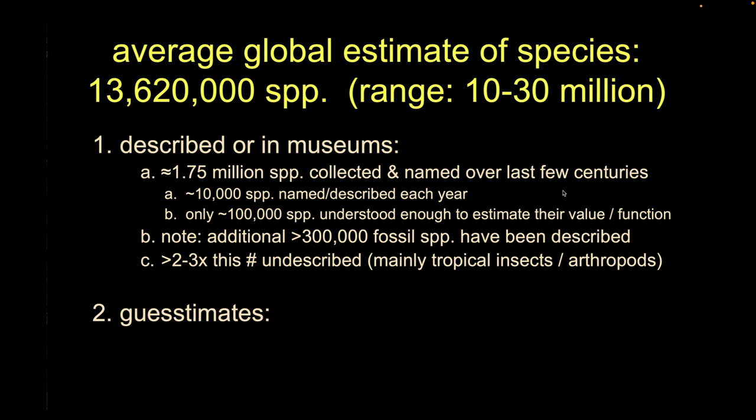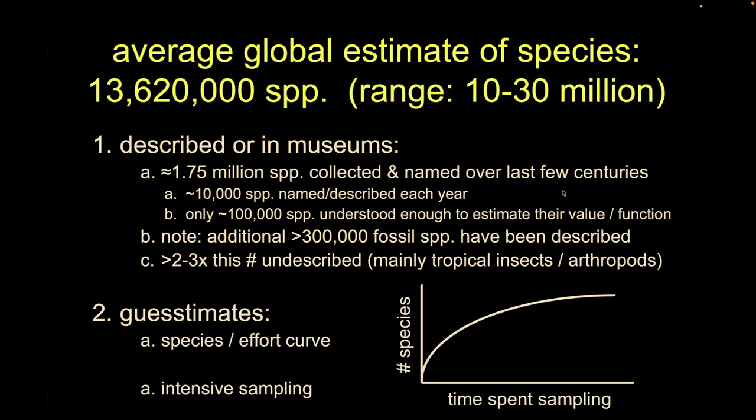Another way to estimate total diversity: species accumulation curves. We can survey one square meter, then a second, then a third, see how many additional species we get, and if we know the total area of a field — say 10 square kilometers — we can run the numbers. Or we can do intensive sampling to look at different taxonomic constituents and extrapolate from there.